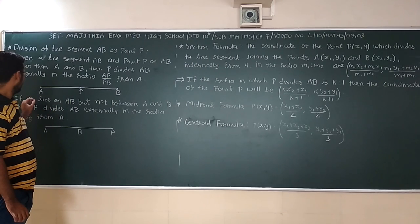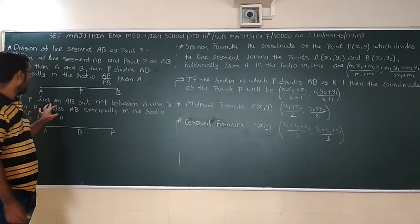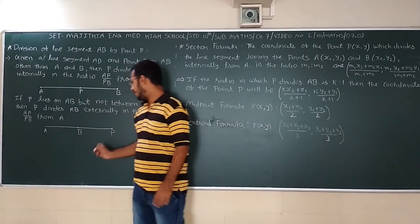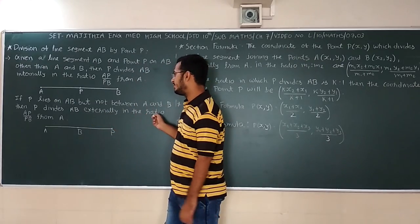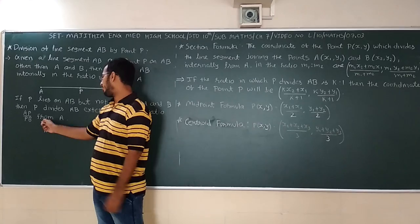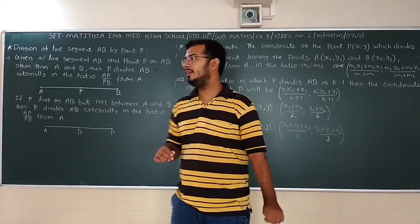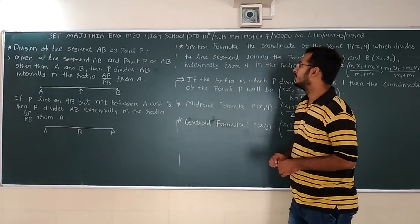Second one, now the line segment AB and P is external. So if P lies on the AB but not between A and B, here P is outside. Then P divides AB externally in the ratio from AP upon PB from A. It is external division, external it will come in 11 standard, not internal. We will study about how we interpret.